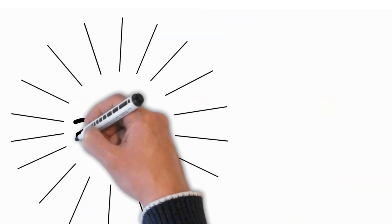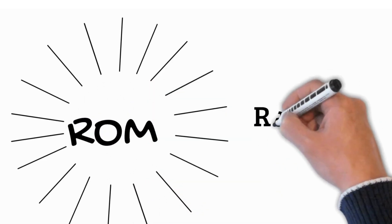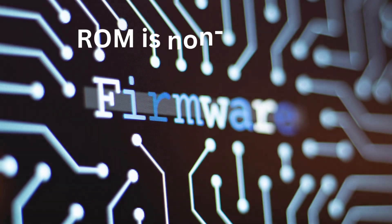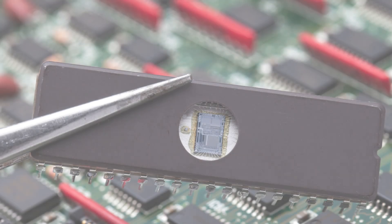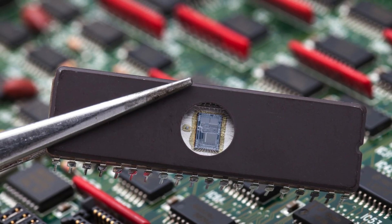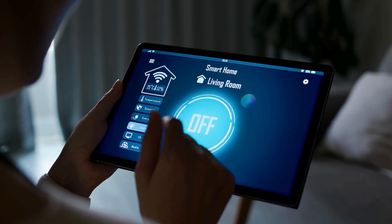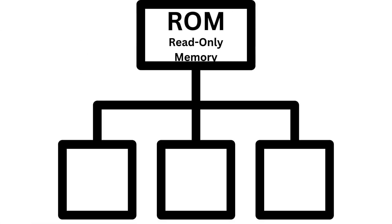Next is ROM, or read-only memory. Unlike RAM, ROM is non-volatile, which means it retains its data even when the power is off. ROM is primarily used to store firmware — permanent software programmed into the hardware. You'll find ROM in devices like BIOS chips in computers and embedded systems in appliances. There are different types of ROM, such as PROM, EPROM, and EEPROM, each allowing for various levels of data rewriting.